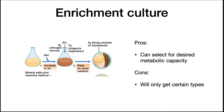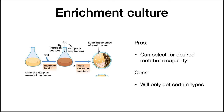Sometimes there is a specific metabolic group you are interested in isolating. For example, if you know nitrogen fixation is going on in soil and want to isolate a bacterium carrying out that process, you can prepare a medium containing no nitrogen source and demand that any bacterium that grows must fix its own nitrogen from nitrogen gas. If you put this broth in a flask and shake it, you make the broth selective for aerobic nitrogen-fixing bacteria. This is called enrichment culture.